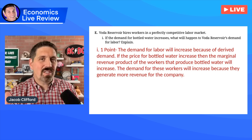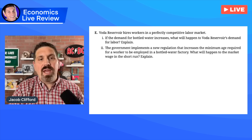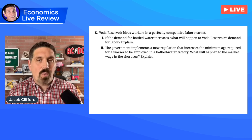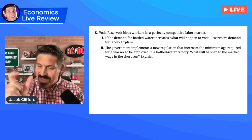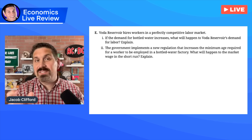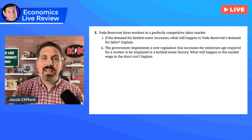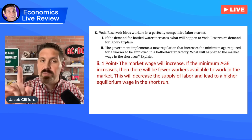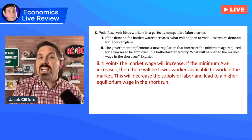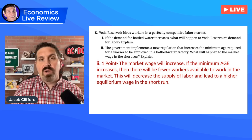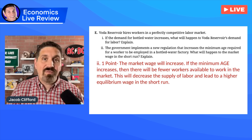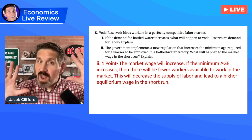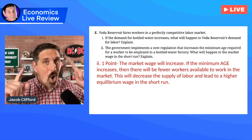Another point: if the government implements a new regulation that increases the minimum age requirement — I had to read that one several times because I kept thinking it said minimum wage, but it's minimum age. So now some people who are 16, 17, or 18 years old can't work there. What's going to happen to the equilibrium wage in the market? It's going to increase. You had to explain why: there are fewer people available to work because now only older people are allowed to have the job. The supply of labor would shift to the left, decrease, causing the equilibrium wage to increase. That's it for number one — at least nine points.